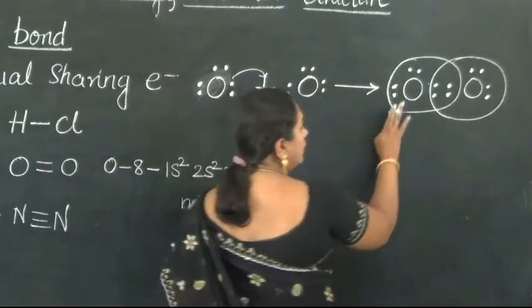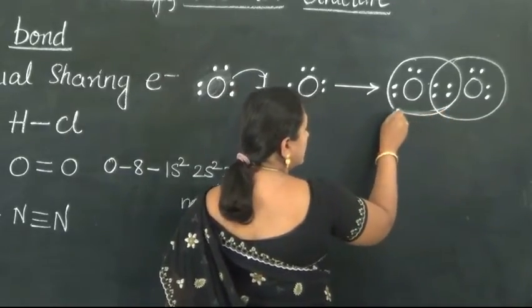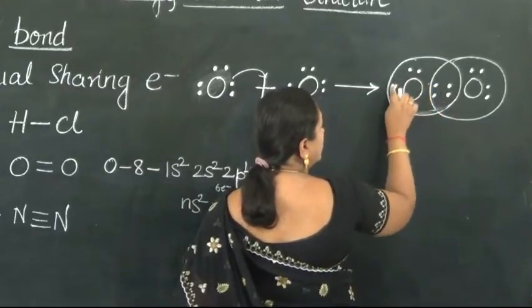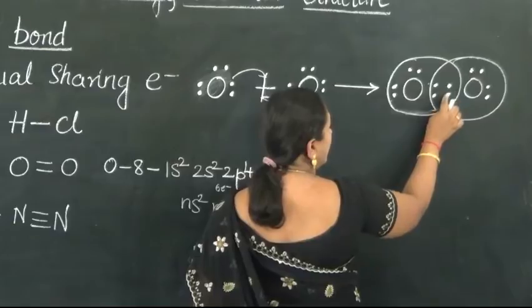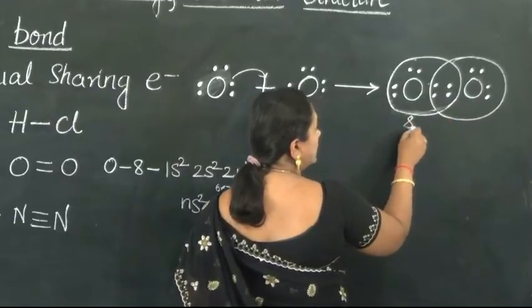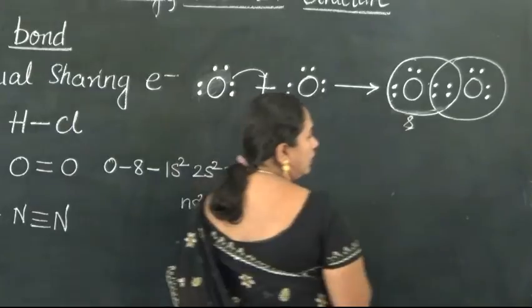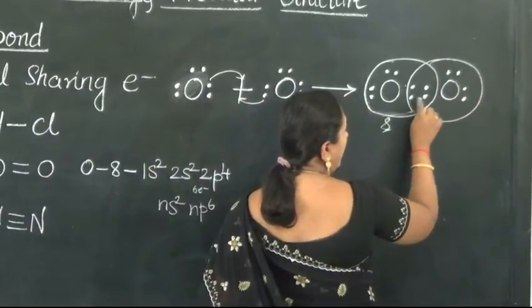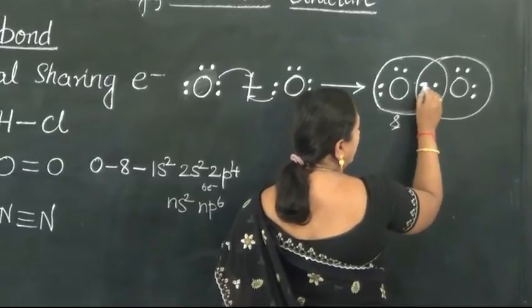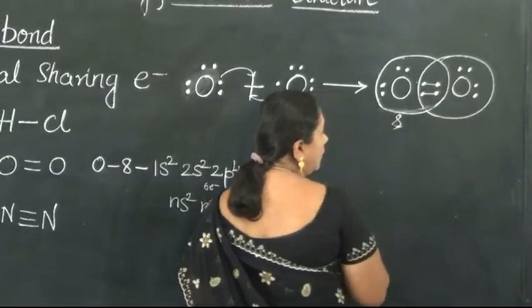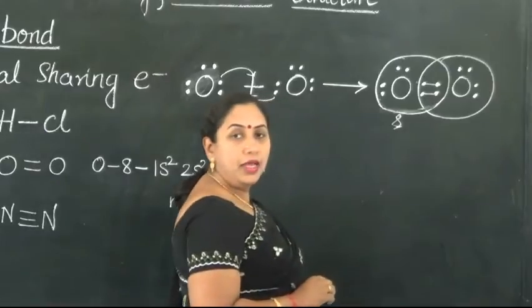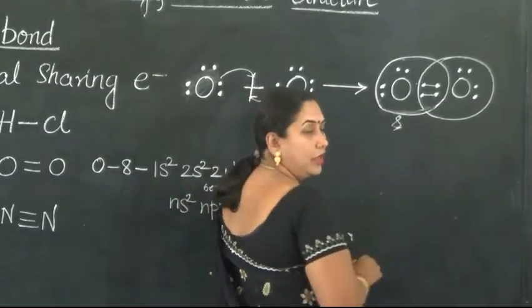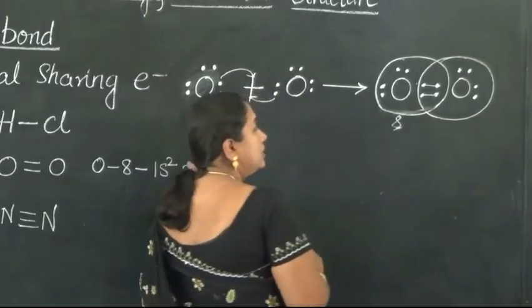Now let us count the number of electrons belonging to each atom of Oxygen. Counting 1 through 8 — so the outer shell of this Oxygen atom has 8 electrons. Similarly, counting for the other Oxygen atom — it also has 8 electrons in its outer shell. So these 2 atoms of Oxygen are combined by a double covalent bond.